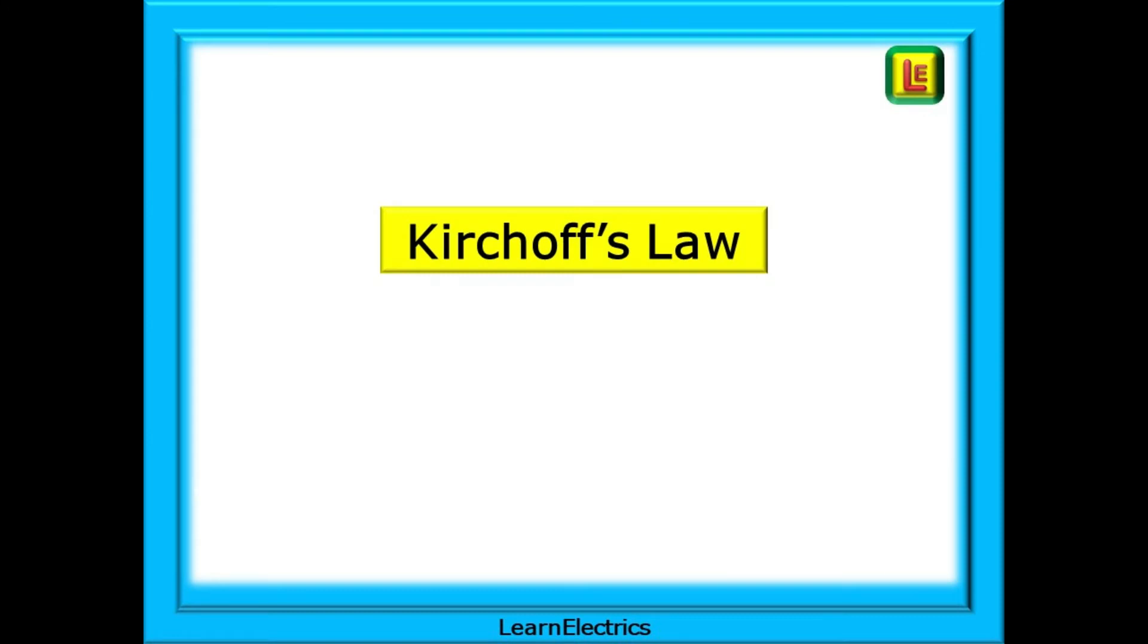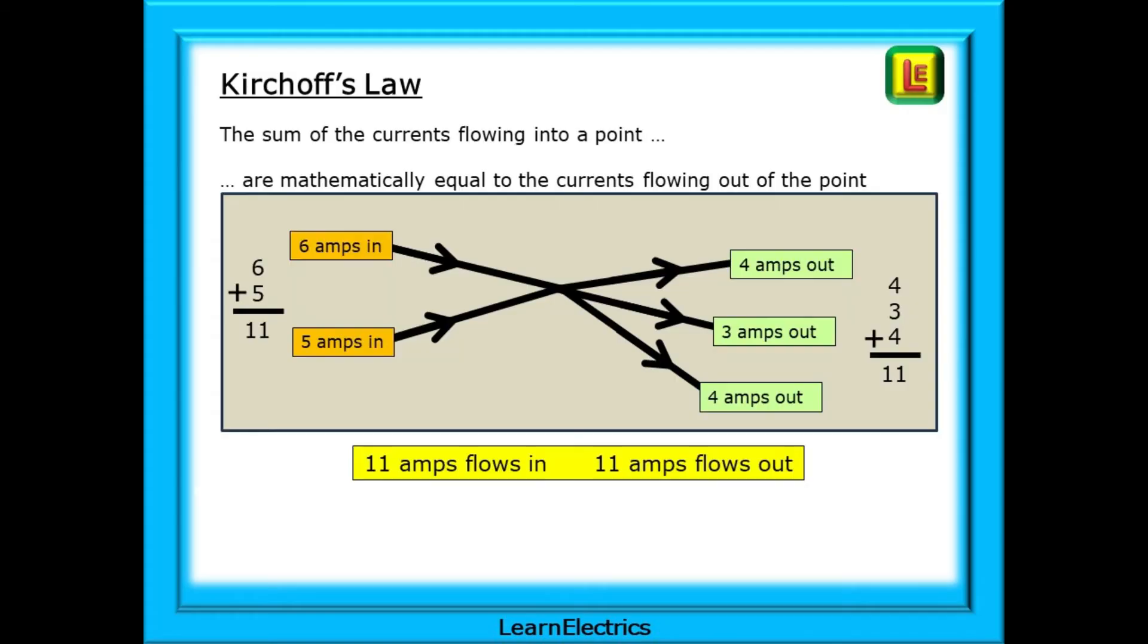Let's look at Kirchhoff's law and one of the fundamental rules of electricity. This law tells us that the sum of the currents flowing into a point are mathematically equal to the sum of the currents flowing out of the point. So here, 11 amps flows into a point, so 11 amps must flow out. It cannot be any other way.